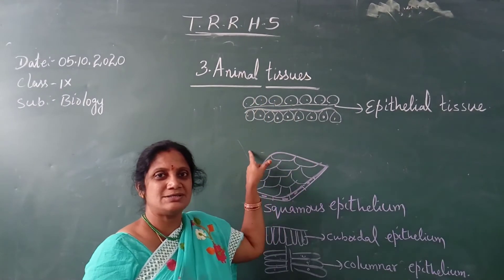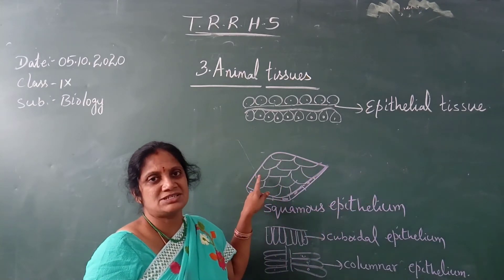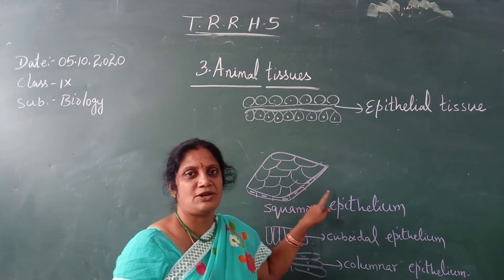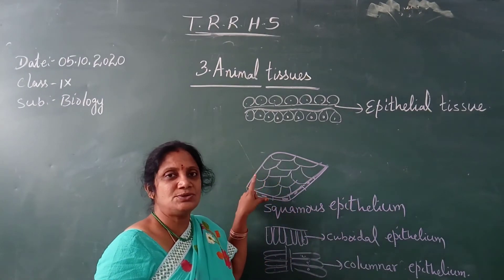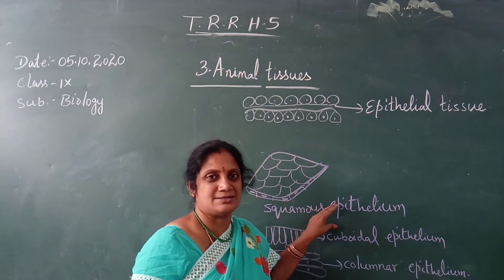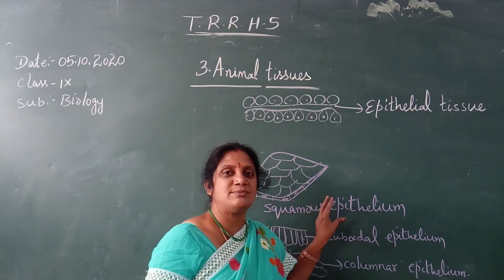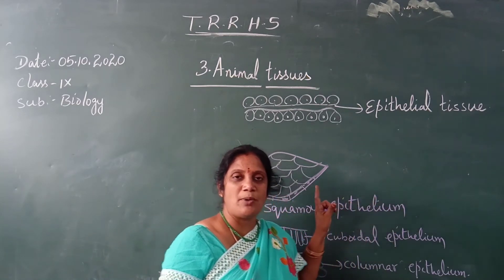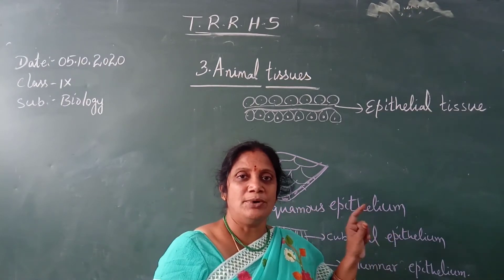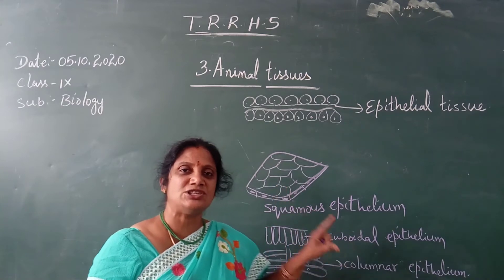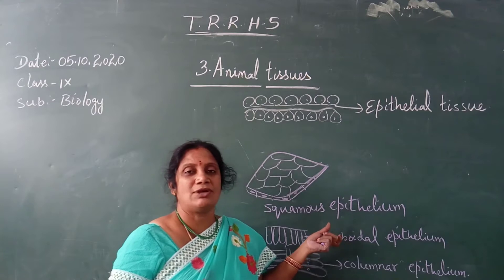We have already discussed what a cell is and what a tissue is. A cell is the basic structural and functional unit of an organism. A tissue is a combination of identical or similar cells that perform the same function. For example, we will look at our liver cells.